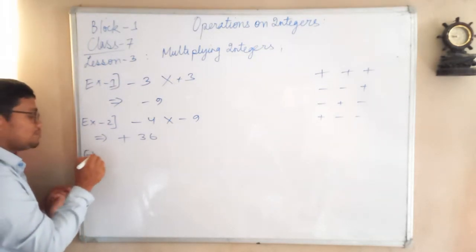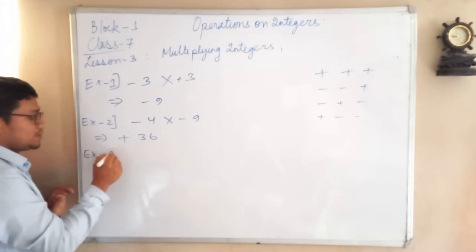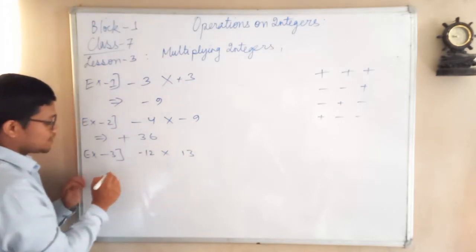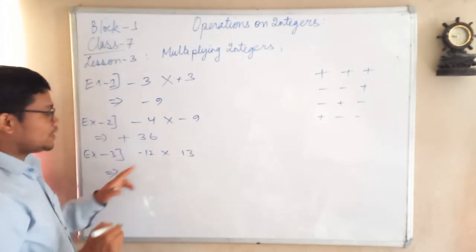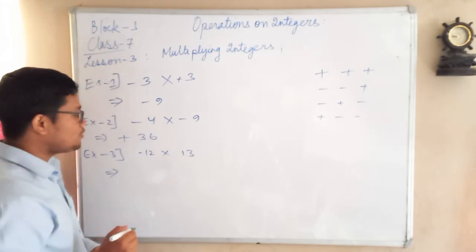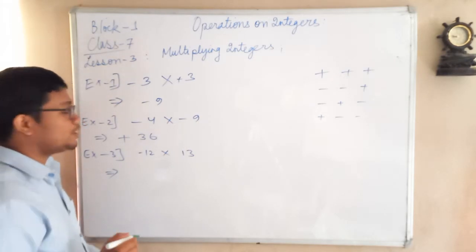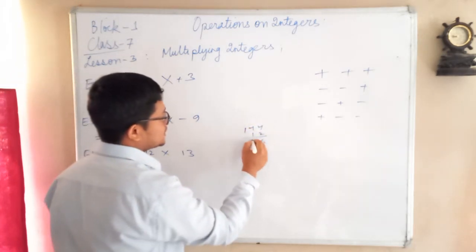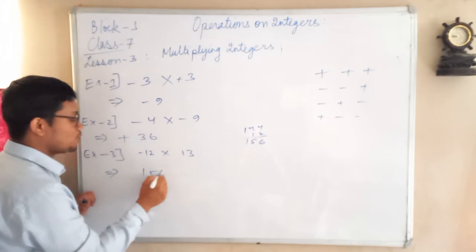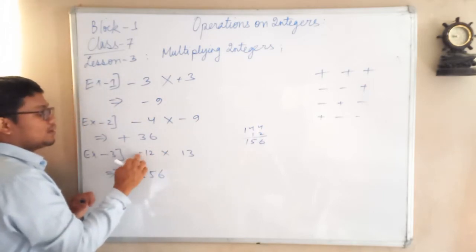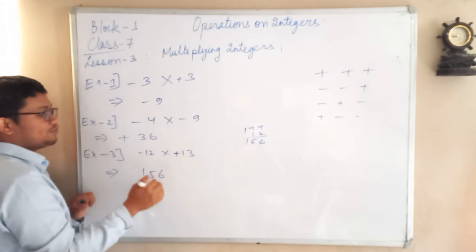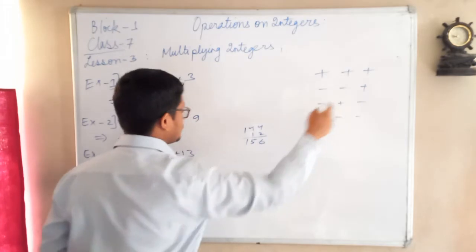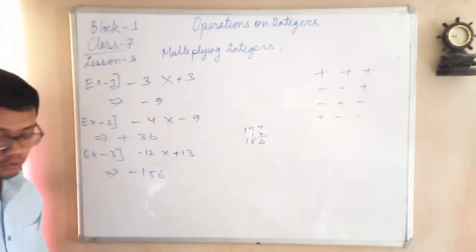Let me give you an example with a bigger number. Let us say minus 12 into 13. Twelve 13s: 12 × 12 is 144, plus 12 is 156. So the number part is 156. Now for the sign: before 13 there is a plus sign, so minus times plus gives minus. The answer is minus 156.